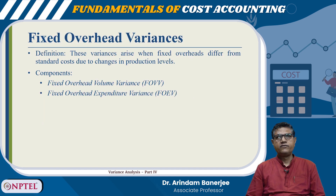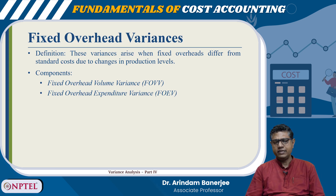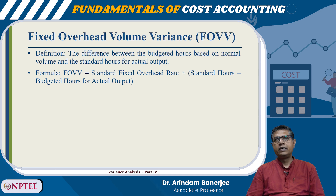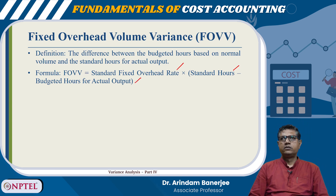Now for fixed overhead variances. These variances arise when the fixed overheads differ from standard cost due to changes in the production levels. There are two components: fixed overhead volume variance and fixed overhead expenditure variance. The fixed overhead volume variance is defined as the difference between the budgeted hours based on the normal volume and the standard hours for actual output. The formula is: FOVV equals standard fixed overhead rate into standard hours minus budgeted hours for actual output.